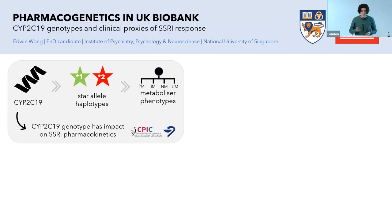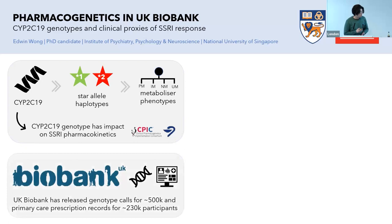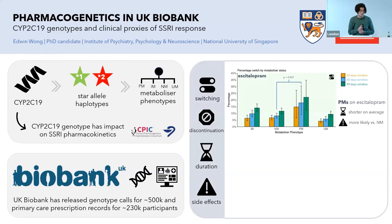The link between genetic variants at CYP2C19 and pharmacogenetics is pretty well established — several groups have published guidelines about changing dosage for these medications based on metabolizer status. But what's less clear is the link between CYP2C19 genotypes and actual clinical outcomes. To help bridge this gap, I worked with researchers at King's to look at the UK Biobank and assess these relationships, particularly looking at primary care prescription records. We were able to tease out several different proxy outcomes of clinical response, including SSRI switching, discontinuation, duration, and a variable we termed side effects — basically linking clinical event records from primary care to the actual prescription dataset.